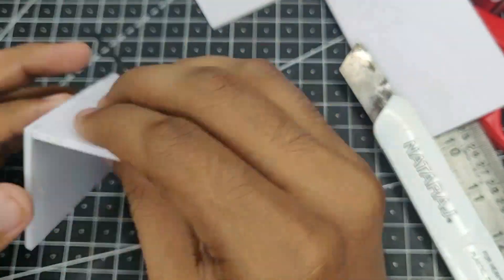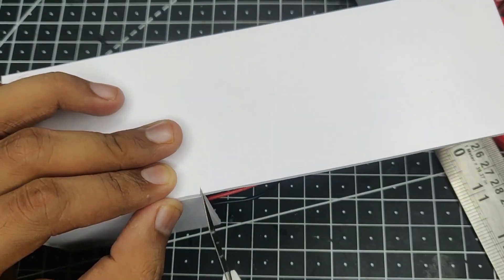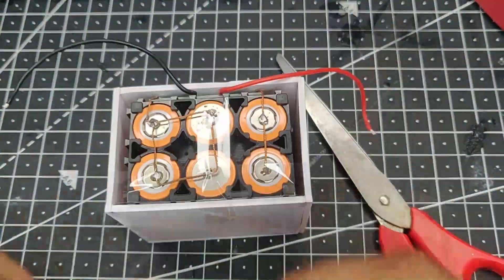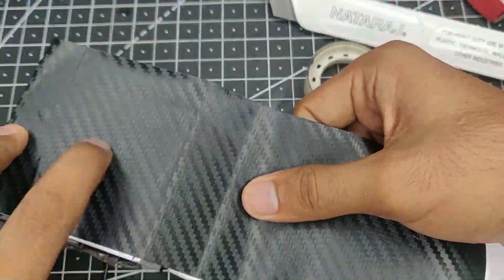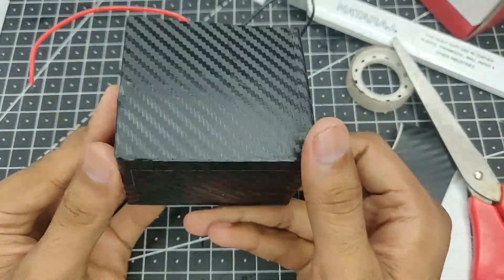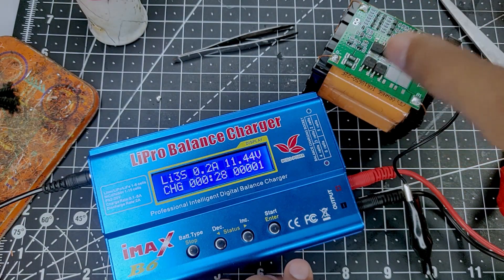So there it is guys, that's how you can create a 12 volt battery out of 18650 batteries using a BMS circuit. Thanks for this video, hope you liked it. If you have any doubts you can comment down below, I'll try to answer them as soon as possible. I'll see you all in the next one.